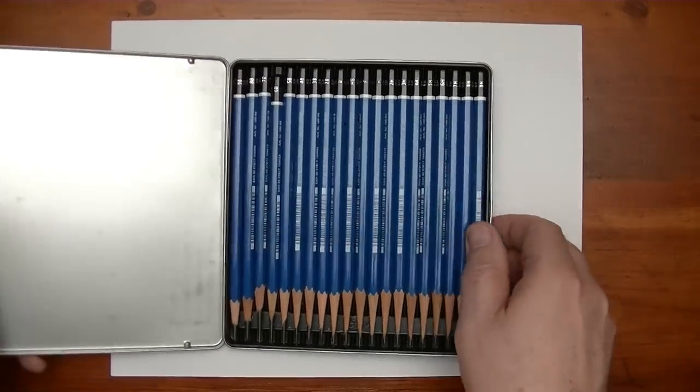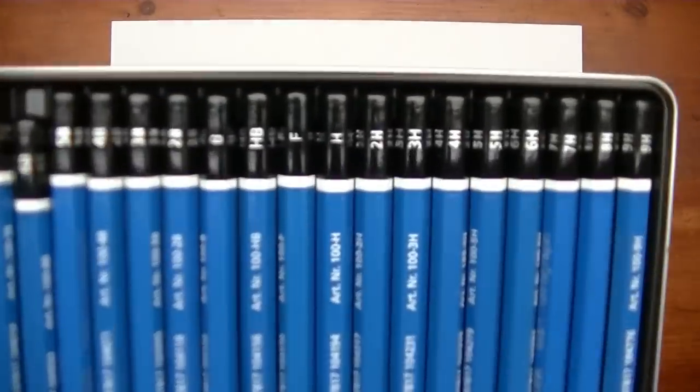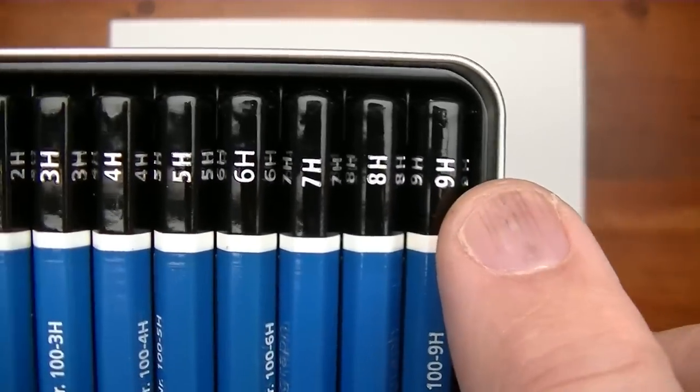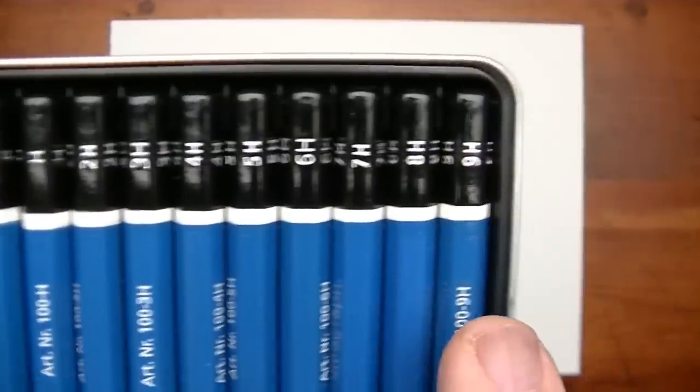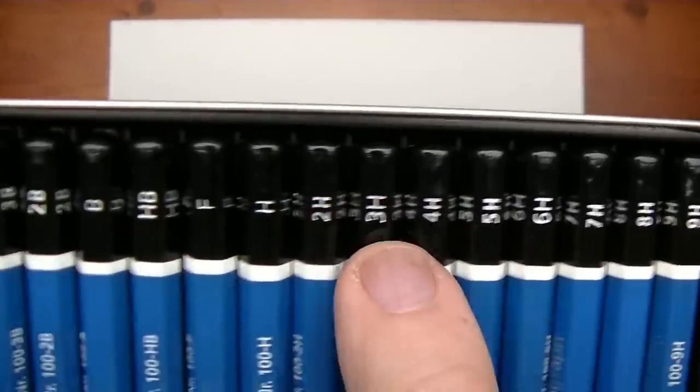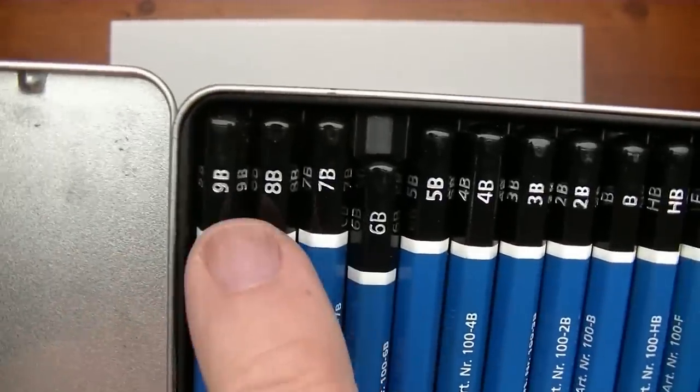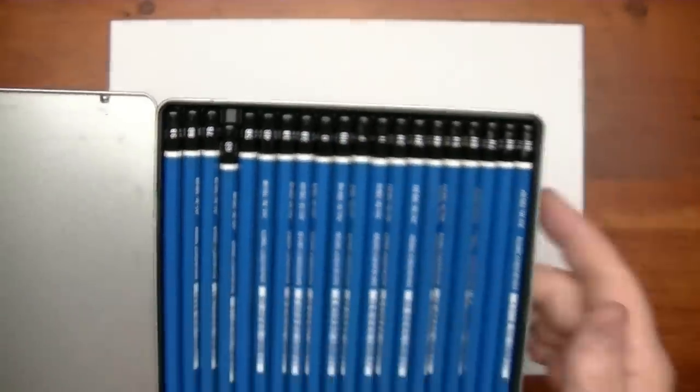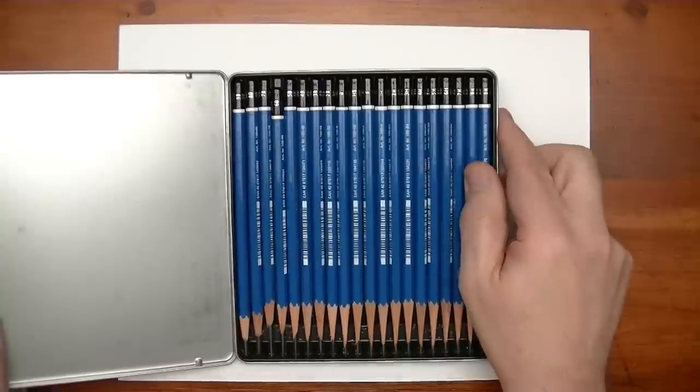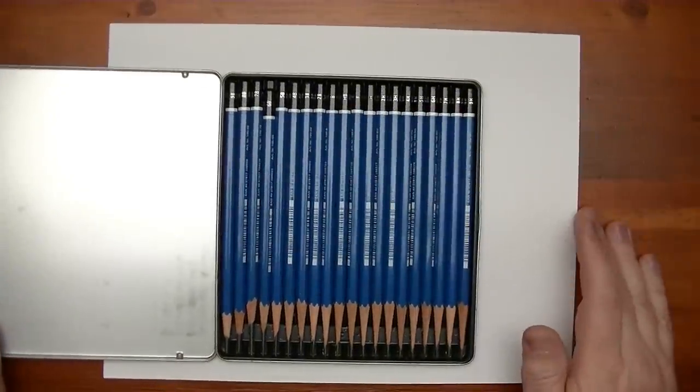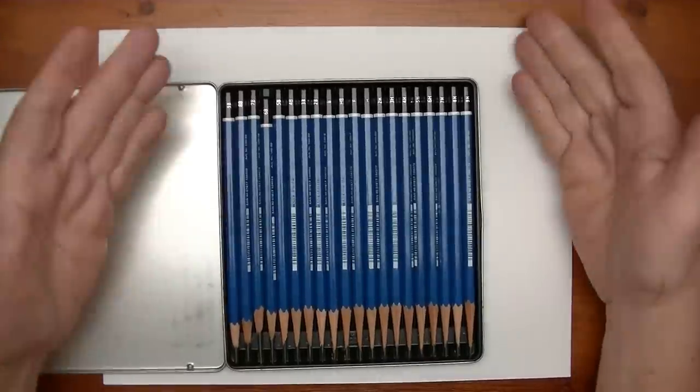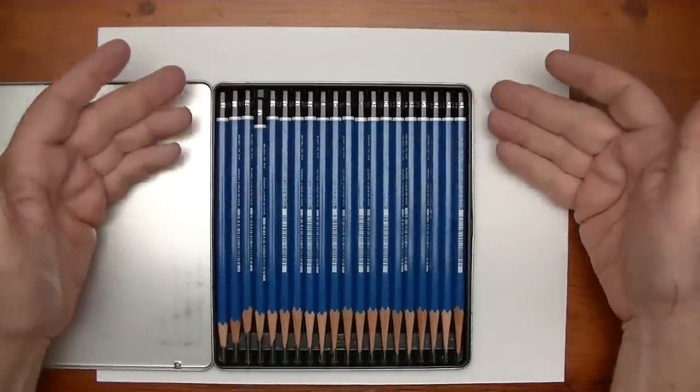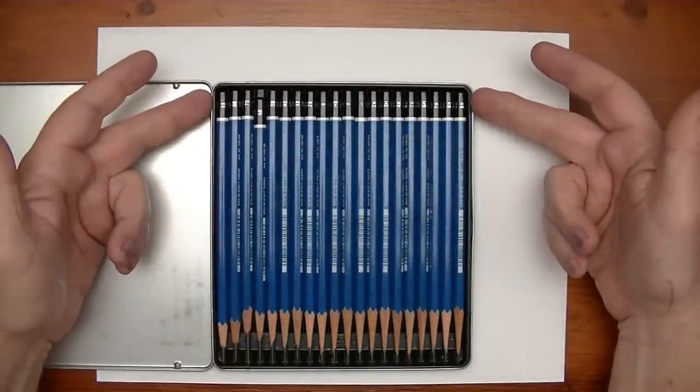If you look closely on the end, you can see that they have these little ratings. And in this case, it goes from 9H all the way to 9B. There are some sets that will actually have a 10, 11, even a 12. I happen to have some over there. But the majority of them will be from 9H to 9B.